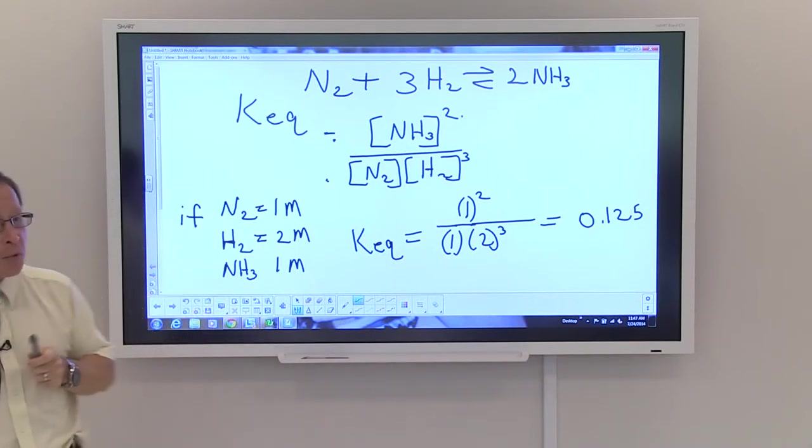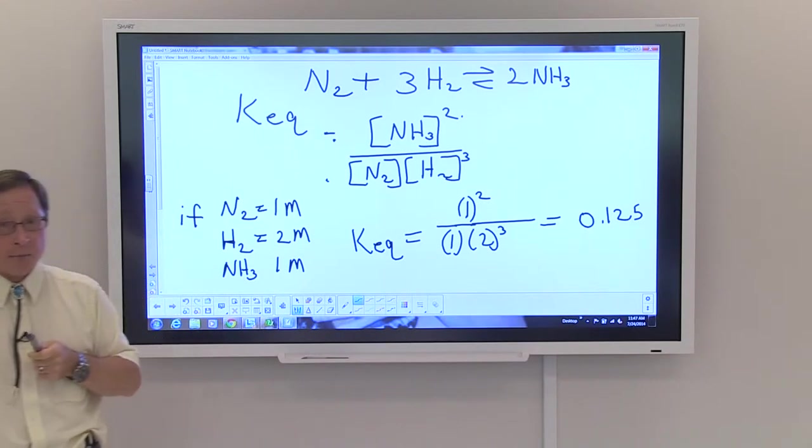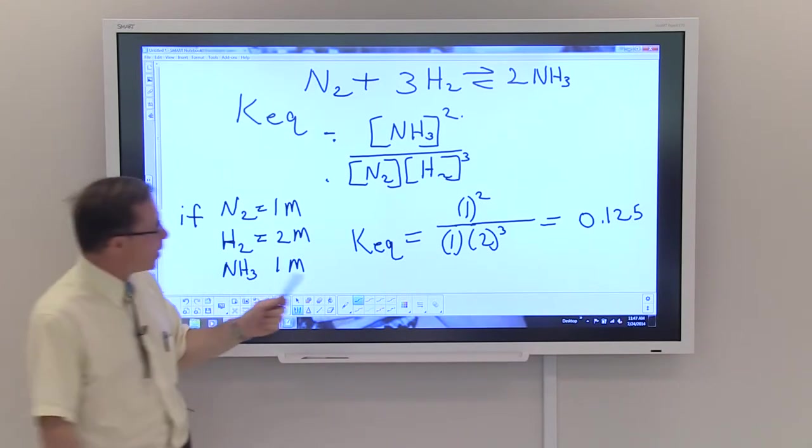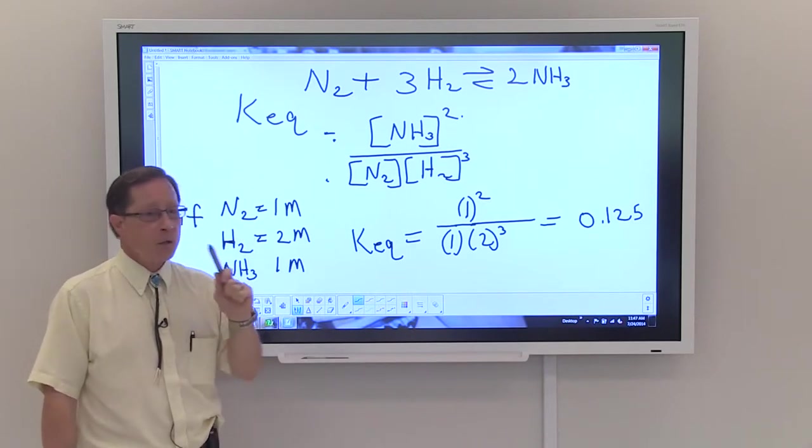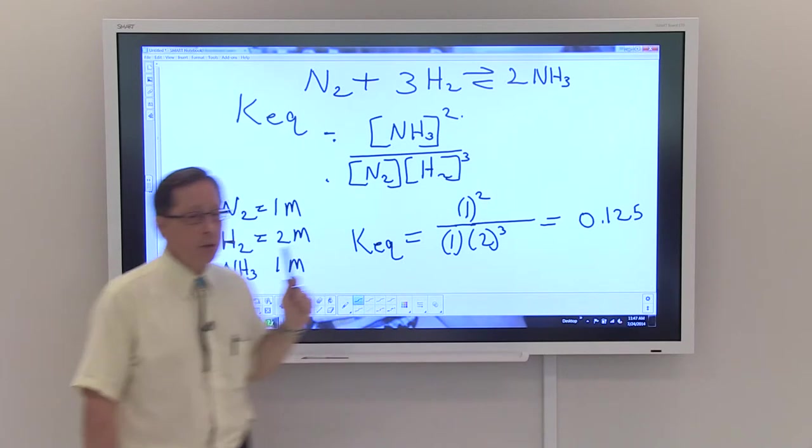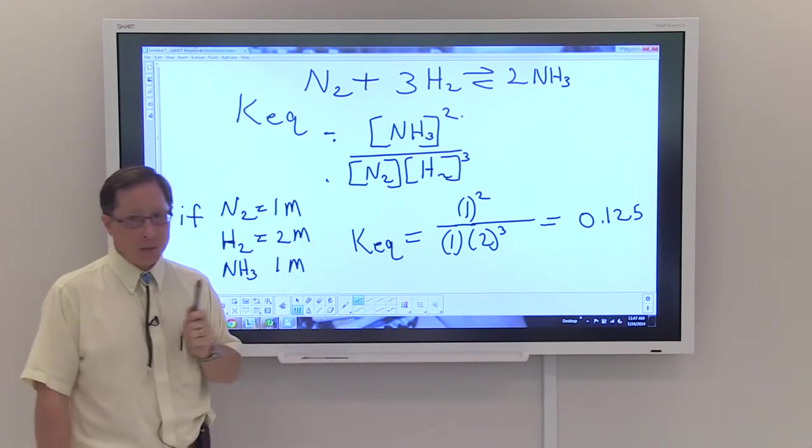Now, these numbers that I've given you were simply examples. They would not reflect what you can actually get from this process. But given that, given the values that we have, I would ask you this question: With a 0.125 would product be favored or would reactant be favored?